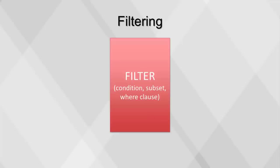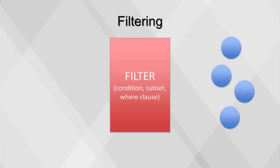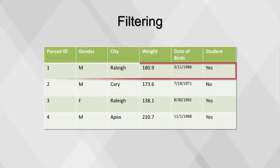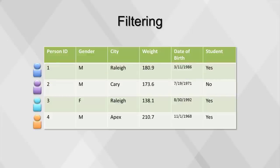While selecting limits a dataset's size by omitting certain columns, a filter limits a dataset's size by omitting certain rows. A filter is also known as a condition, subset, or in SQL, a where clause, and it's commonly used for investigative purposes. It's important to be aware of the information contained within the row of a data table. A row defines the level of detail that is contained in the dataset. For this example, each row represents one person. An ID field, such as Person ID, in which no rows contain the same ID, can be used to determine that the table's level of detail is a person.